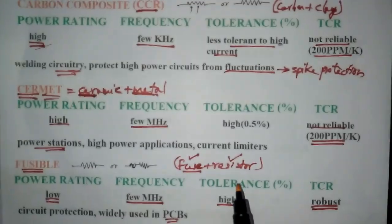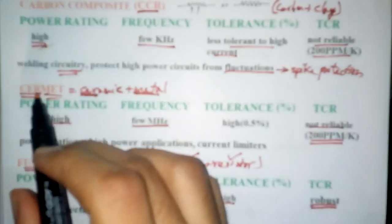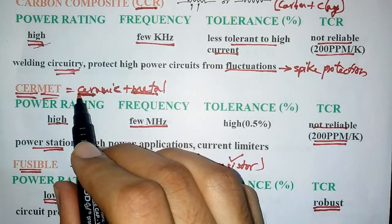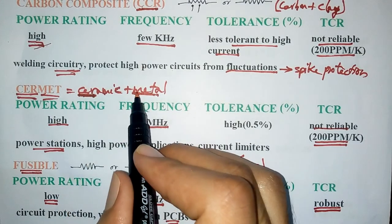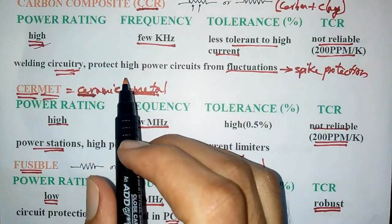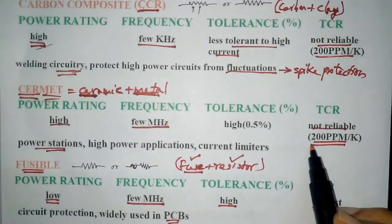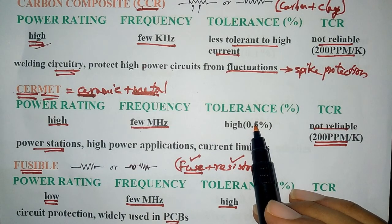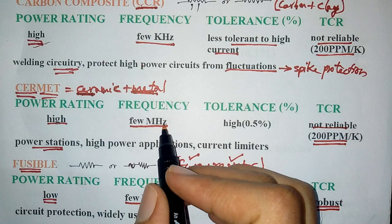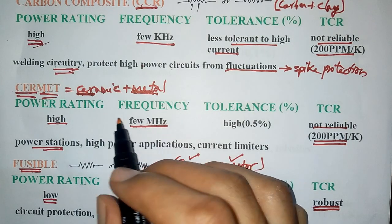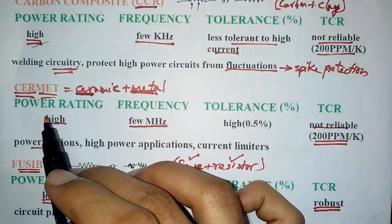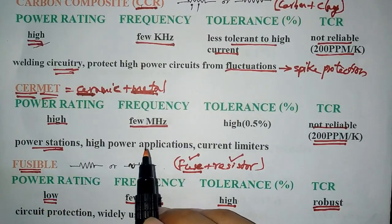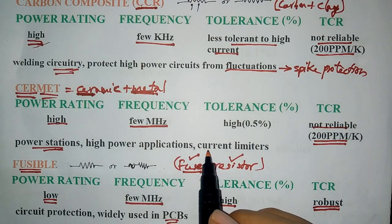Now let's look at thick film resistor: cermet resistor. It is constructed by a material called cermet, which is a combination of ceramic and metal. Its main drawback is its high TCR value. It is highly tolerant and could be operated in few MHz of frequency. Its power rating is high, which is the reason it is used generally in power stations, high power applications and current limiters.